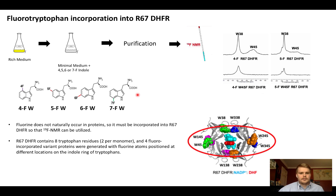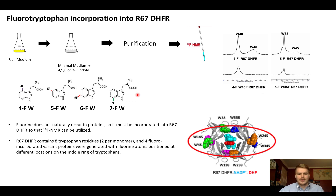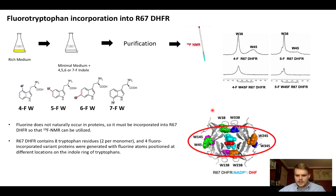We incorporated these fluoroindole rings into cells growing in media for protein expression. After incorporating the fluoroindole rings, we induced expression of the protein with IPTG and the lac operon system, and the protein incorporated these indole rings into the tryptophan amino acids. There are eight tryptophans in R67; however, since it's a homo tetramer with two per monomer, we only see two NMR peaks — tryptophan 38 at the dimer-dimer interface, and tryptophan 45 at the monomer-monomer interface.